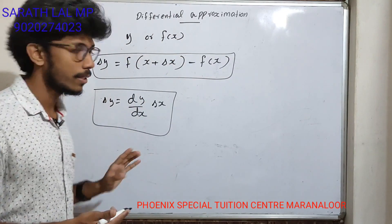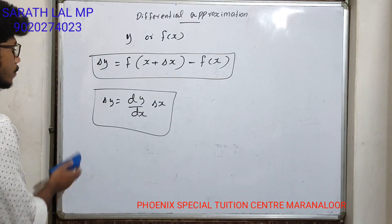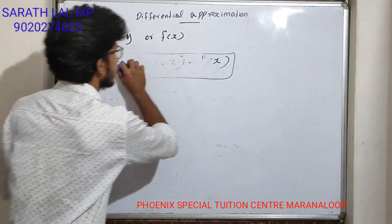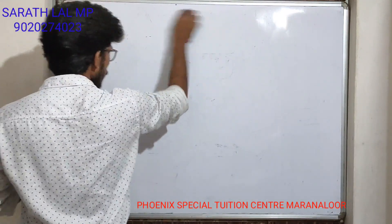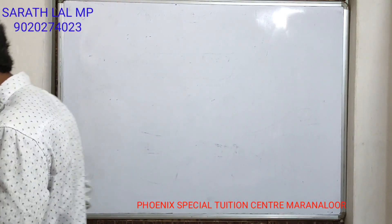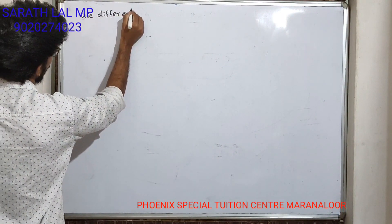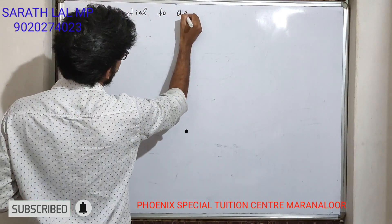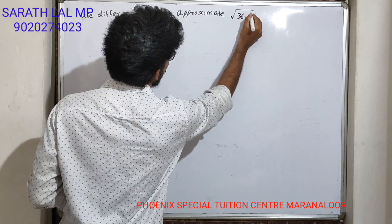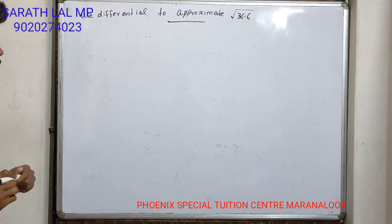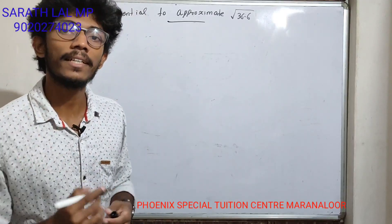We'll study the differential approximation using the first step and second step. Now we'll try a problem. The problem is: Use Differential to Approximate root 36.6.